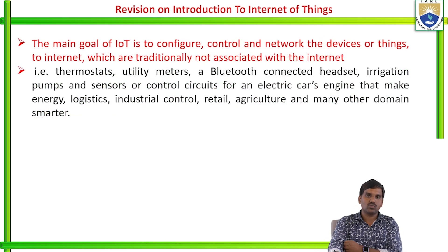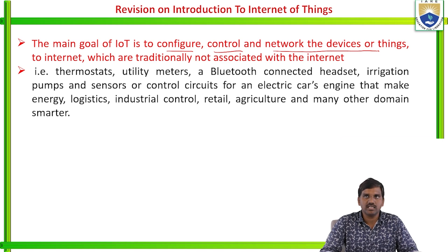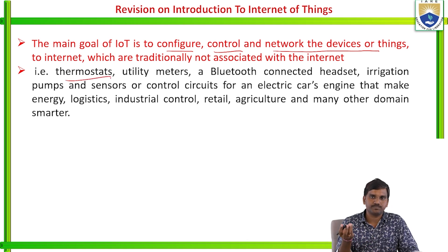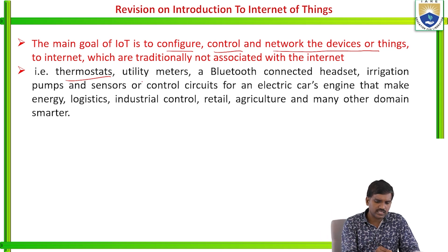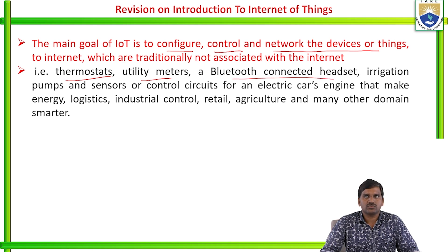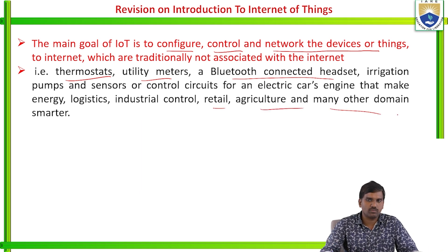What is the main goal of Internet of Things? To configure, control and network the devices or things to the internet which are traditionally not associated with the internet. Examples include a thermostat to record the temperature of a room, body or any environment; utility meters; a Bluetooth connected headset; irrigation pumps; sensor or control circuits for electric car engines; making logistics, industrial control, retail, agriculture and many other domains smarter.